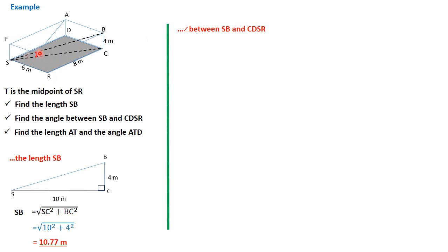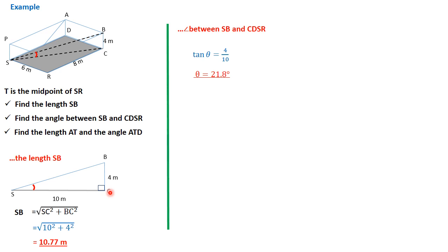Therefore the angle we're looking for is that red arc there — the angle between the line and its projection on the plane CDSR. Using tan again: tan of this angle equals opposite over adjacent, so 4 over 10, which is 0.4. Tan inverse of that would be 21.8 degrees. That gives us the angle between SB and CDSR.